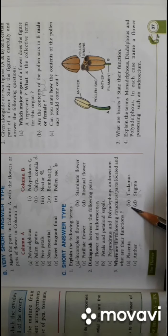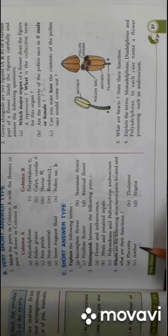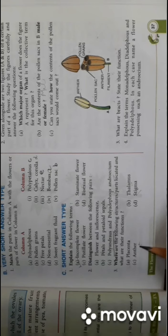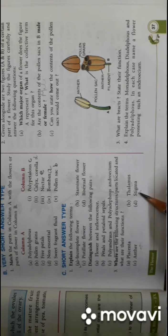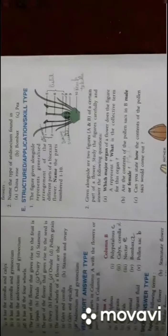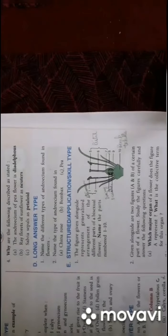Anther - present in the androecium in the flower, and function is to produce the pollen grains. Stigma - present in the gynoecium, and function is it receives pollen grains.